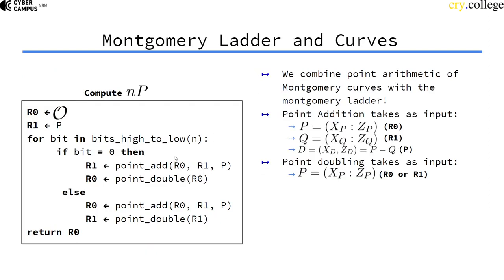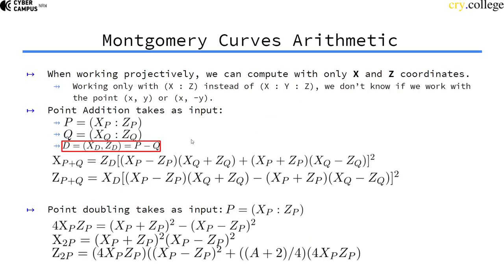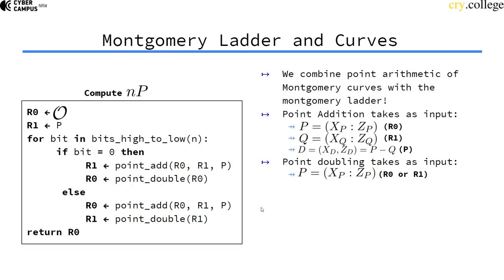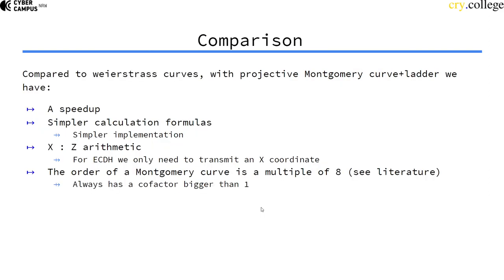And we can go through the Montgomery ladder and use our nice addition formulas and compute. So compared to Weierstrass curves, with projective Montgomery curve plus ladder, we have a speedup. It's faster. The calculation formulas are much simpler. So it's also simpler to implement them.